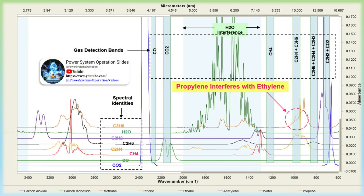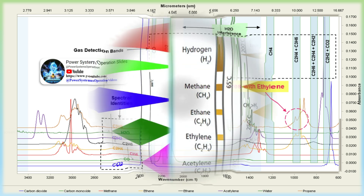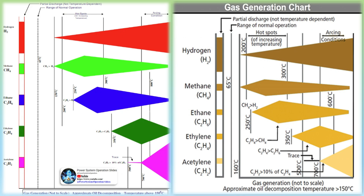In summary, the greatest indicator of potential problems within transformers should not be limited to the concentration levels of the key dissolved gases. By trending the dissolved gas levels, problems can be identified and evaluated further before they cause a catastrophic failure. If key gas concentrations increase significantly from one sample to the next, perform another sample to verify the results. Once confirmed, use trending and diagnostic techniques to determine what the problem may be, then plan an outage to investigate further and, ultimately, to resolve the problem.